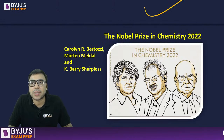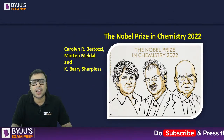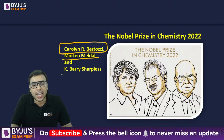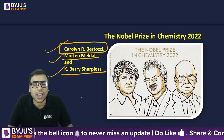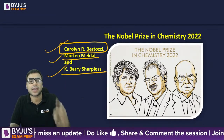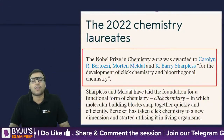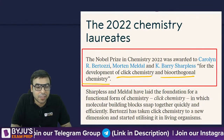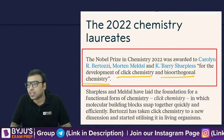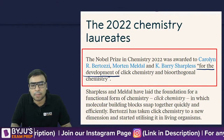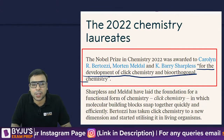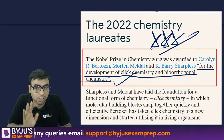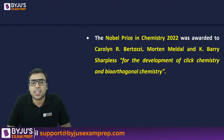Nobel Prize in Chemistry has been given to three people: Carolyn R. Bertozzi, Morten Meldal, and K. Barry Sharpless — for the development of click chemistry and bio-orthogonal chemistry. Please remember these words; star-mark this as it is very very important.